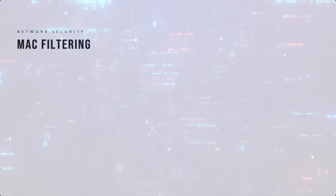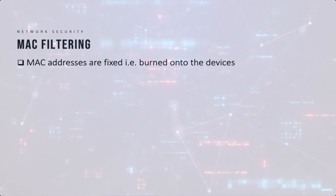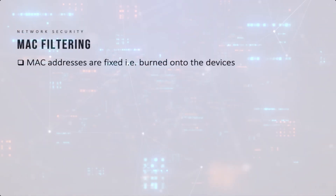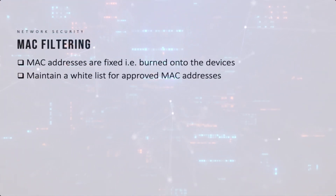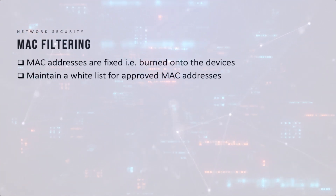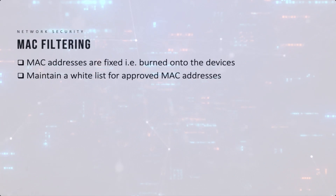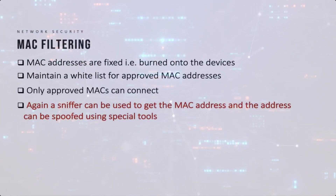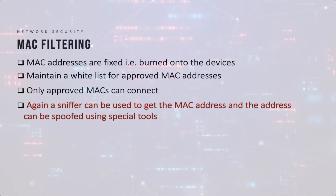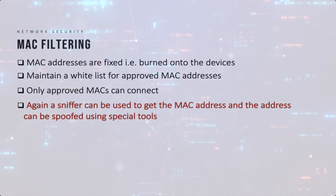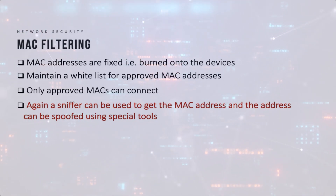Another simple option is MAC filtering. Unlike IP addresses, MAC or physical addresses are physically burned onto devices, so a mobile phone's network interface card will have its own fixed MAC address. One solution is to maintain a whitelist of known authenticated MAC addresses. This worked well a few years ago, but now a sniffer can extract MAC addresses of legitimate stations, and specialized tools allow malicious devices to change their MAC address to that of a legitimate user to bypass this control and connect to the network.